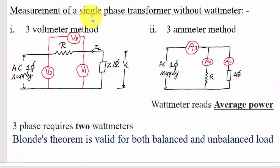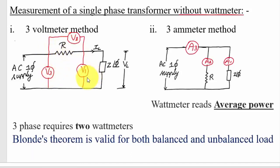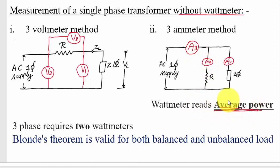For measurement of single-phase power without a wattmeter, you use either the three-voltmeter method or the three-ammeter method. In the three-voltmeter method, only three voltmeters are used — no wattmeters. In the three-ammeter method, only three ammeters are used, connected in a specific configuration. A wattmeter always reads average power.